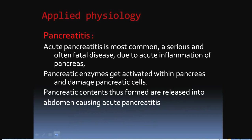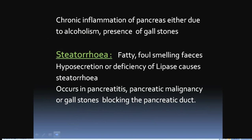In applied physiology, pancreatitis is an important condition. Acute pancreatitis is a serious and often fatal disease occurring due to acute inflammation of the pancreas. Pancreatic enzymes get activated within the pancreas and damage pancreatic cells, with pancreatic contents releasing into the abdomen. Chronic inflammation may occur due to alcoholism or presence of gallstones.